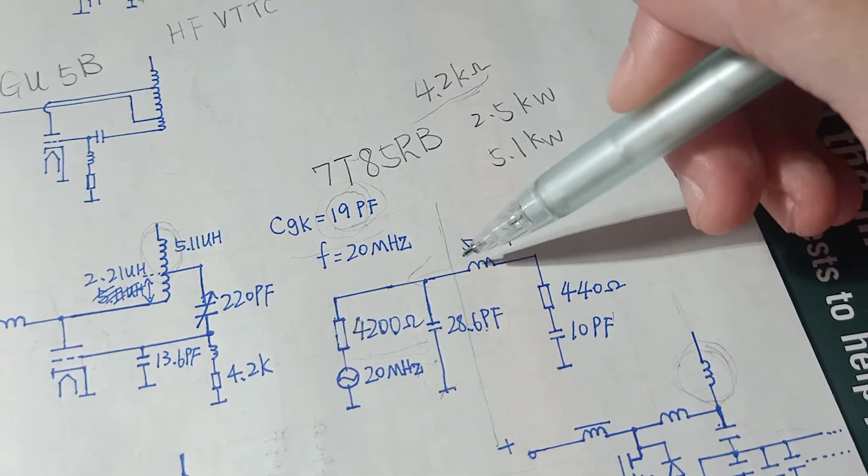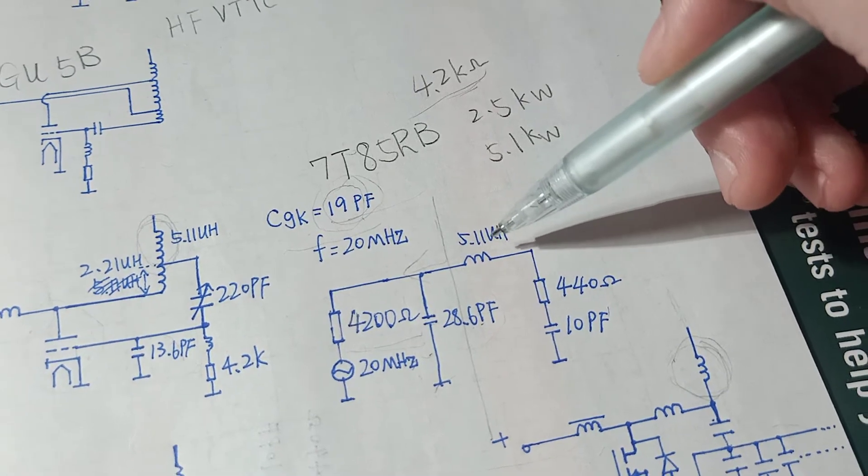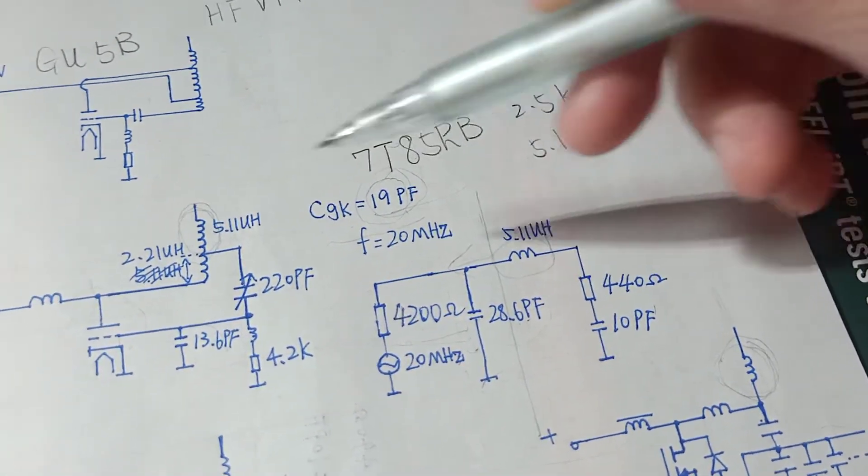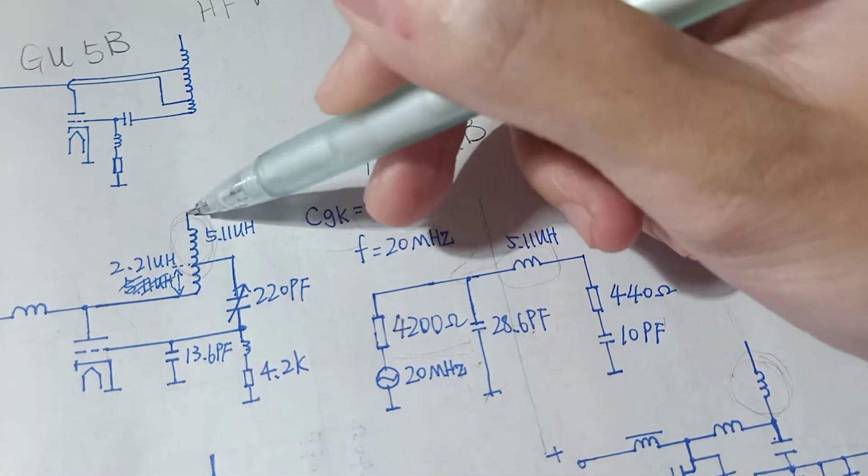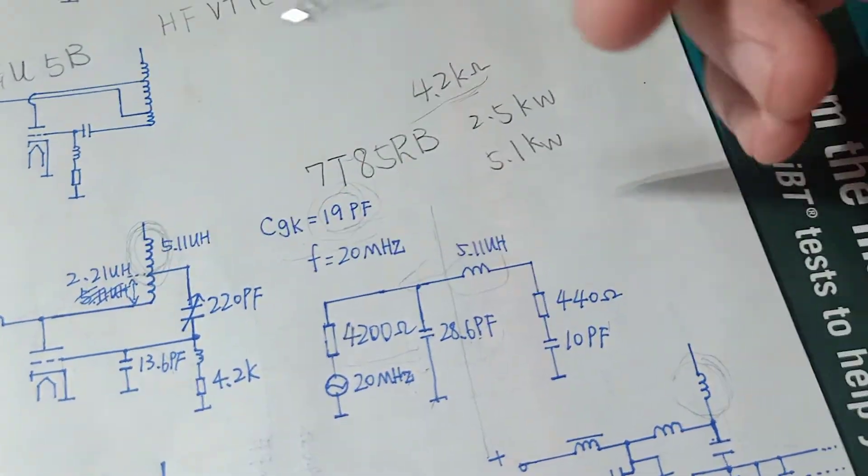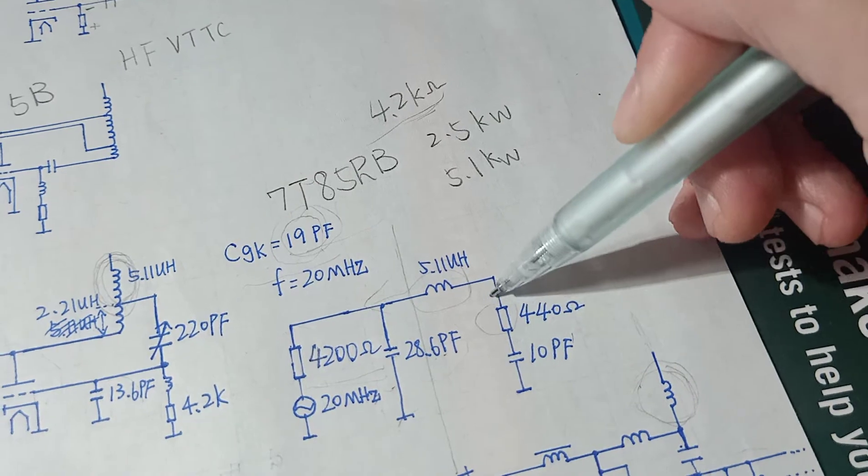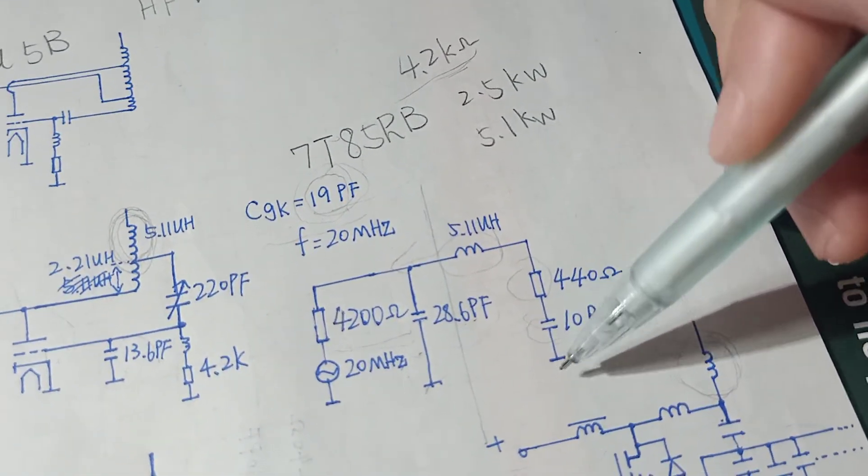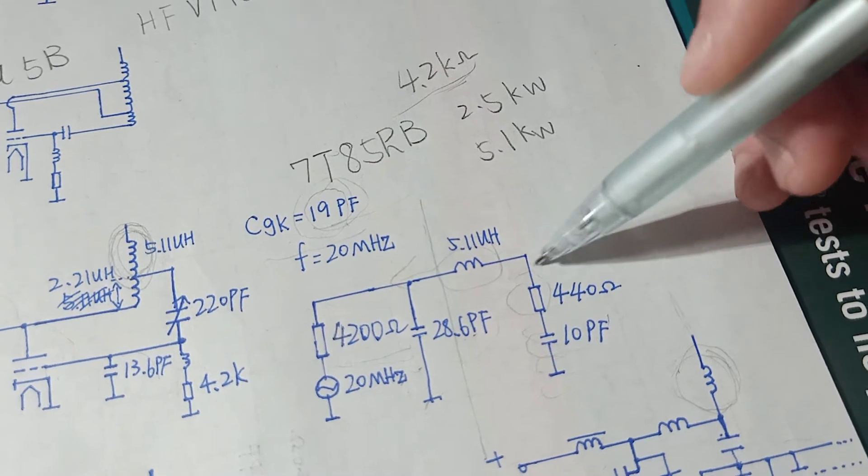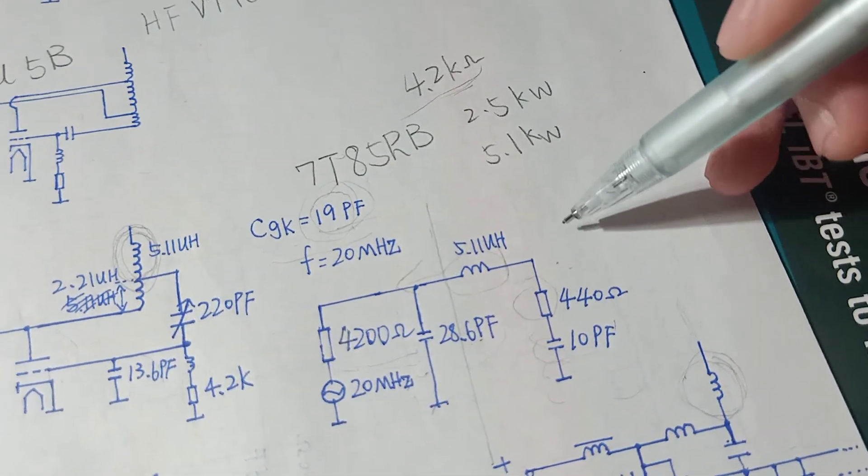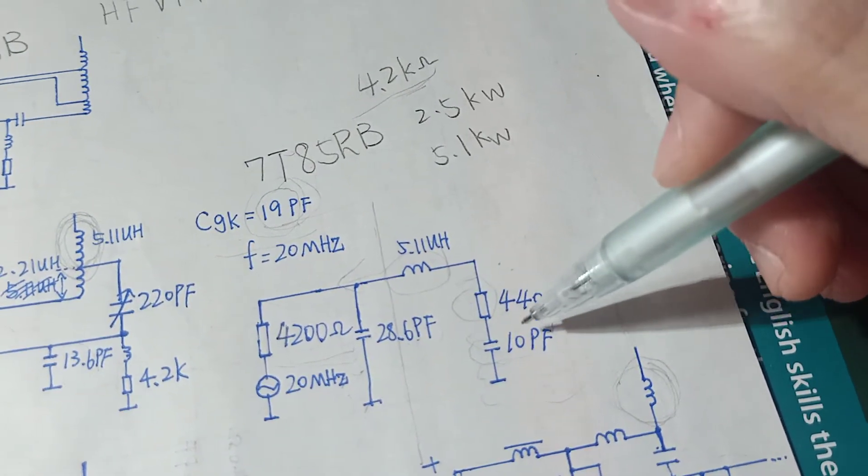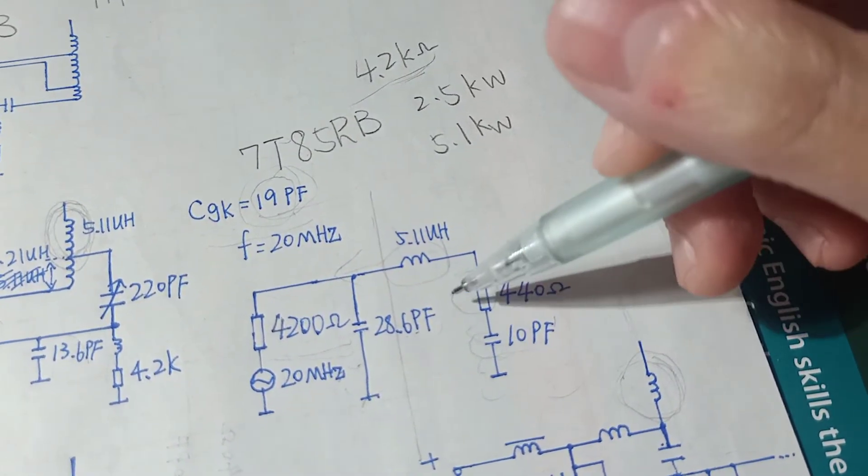And this 5.11mH matching coil is actually this coil here. The resistor in series with a 10pF capacitor to ground is a model for the arc, the plasma flame. This value is from Steve Ward.